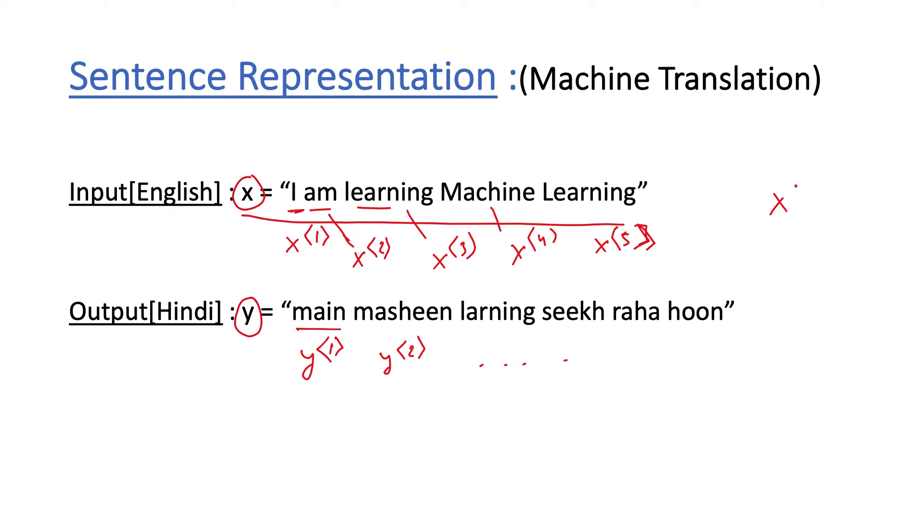We denote the ith training example by x^(i), so this denotes the ith sentence in our training set. Each sentence has multiple words, so the first word in the ith sentence we will denote by x^(i)<1>, the second word would be x^(i)<2>. In general for the ith example we will denote the tth word by x^(i)<t>. This will be our notation throughout the course. Here i is inside the small braces to denote the ith training sample, and in these brackets we will denote the position of the word.